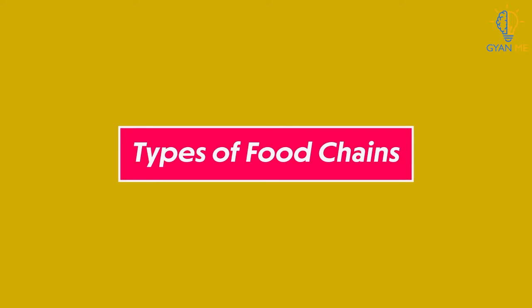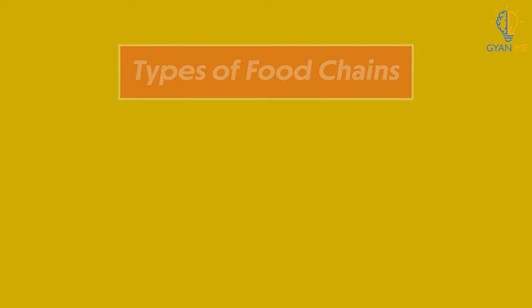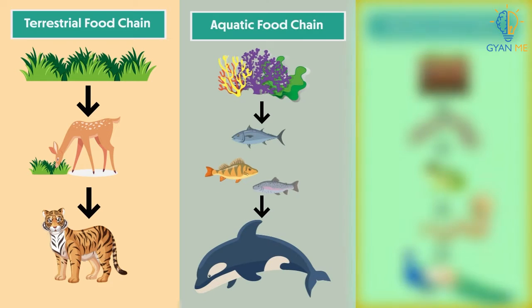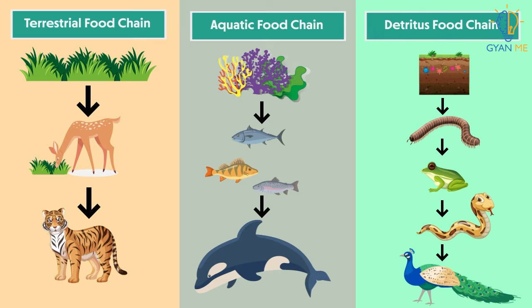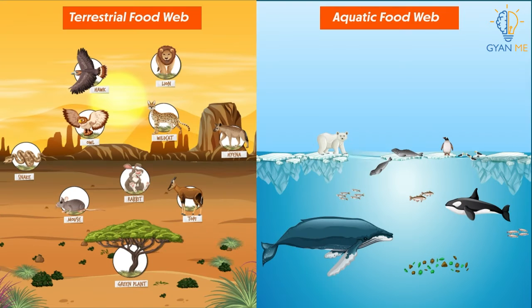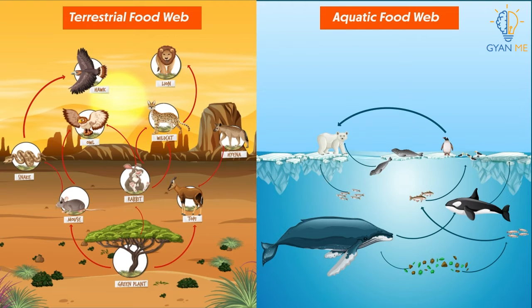Today, let us see some different types of food chain. Food chains are broadly categorized into three types: terrestrial food chain, aquatic food chain, and detritus food chain. Understand that in one ecosystem, a single food chain cannot exist independently — many food chains are interlinked with each other, known as a food web.